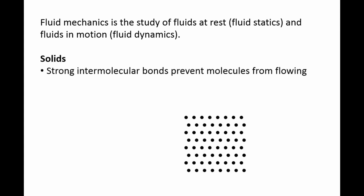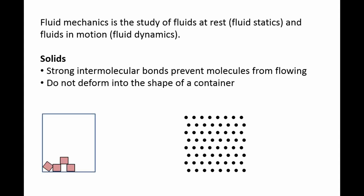Solids are characterized by having relatively strong bonds between its molecules that prevent the material from flowing. If you place chunks of solid into a container, the chunks will not deform into the shape of the container. Solids also are relatively difficult to compress compared to gases. It takes a large, concentrated force to change a solid's volume significantly.